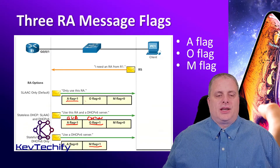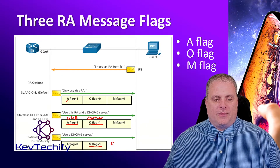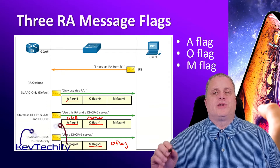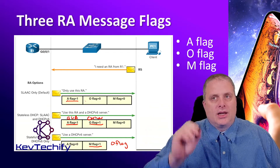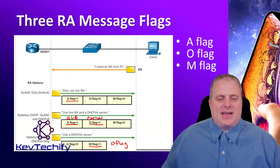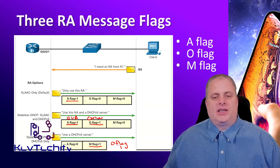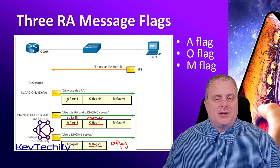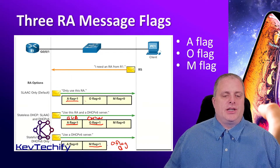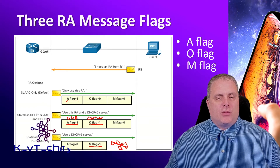What I also find amusing is that a lot of times when people talk about this, they don't mention the O flag at this point. Remember, the O flag means there's other configurations available from a stateless DHCPv6 server. If that is set to a 1, the M flag already says contact the server to get all the information. If it's set to a 0, that means don't contact another server, which contradicts that. The M flag overwrites the O flag if for some reason it's set.